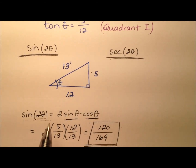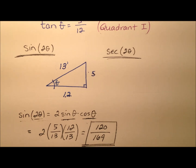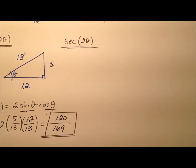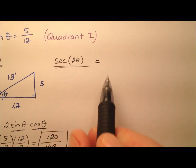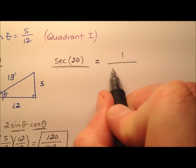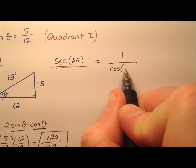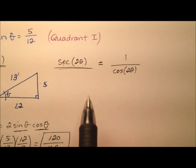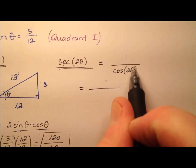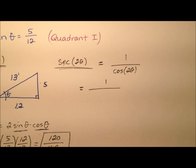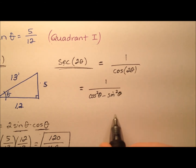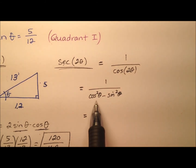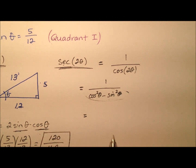We found the sine of twice theta using the double angle identity for sine. Now let's go ahead and find the double angle for secant. Secant is a reciprocal function for cosine, so it's 1 over cosine of 2 theta. We have a nice double angle identity for cosine as well, and that's cosine squared theta minus sine squared theta. We have to be careful because this is in the denominator since we're dealing with a reciprocal function.